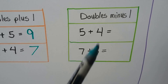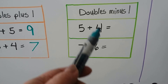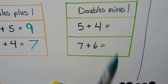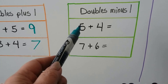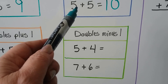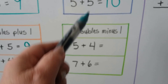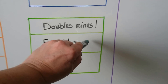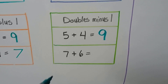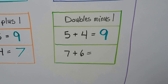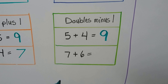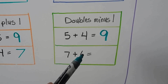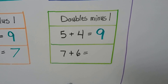For doubles minus one, this addend is one less than this addend: four is one less than five, six is one less than seven. That's how we know it's a doubles minus one. We can use five plus five, which we know is equal to ten, and this four is one less than the five, so the sum is going to be one less than ten — it'll be a nine. Seven plus six: we can use seven plus seven, that's fourteen, and take one away because we're doing seven plus six — that's one less than seven. One less than fourteen is thirteen.